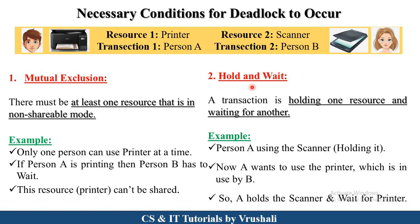The next condition is hold and wait. Person A holds the printer — they use the printer — but at the same time they are waiting for the scanner. Currently, the scanner is used by person B. As per the rule, person B first uses the scanner, then releases the resource, and only then can person A use it. So here person A holds the printer and is waiting for the scanner. This is called the hold and wait condition.